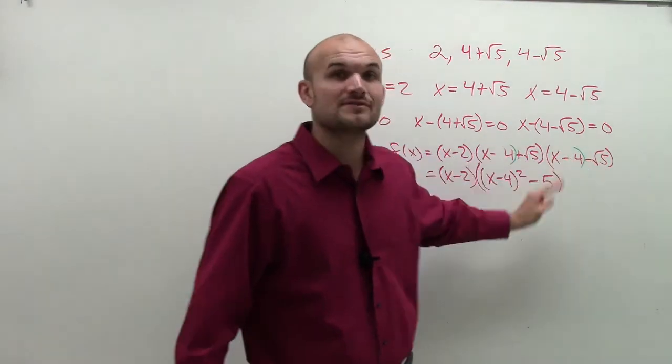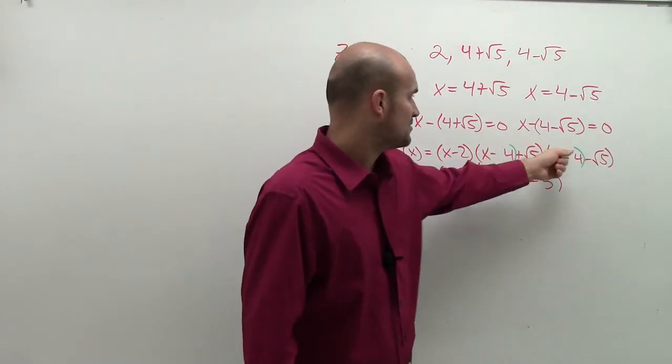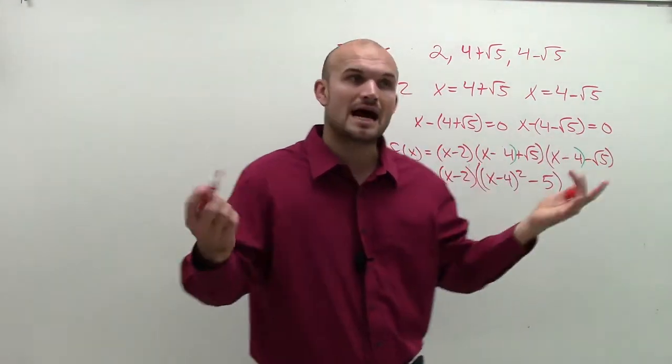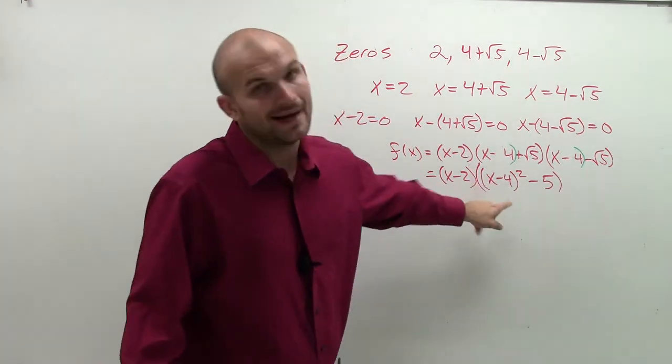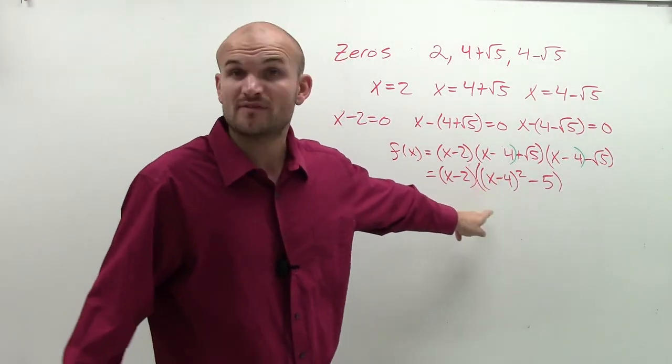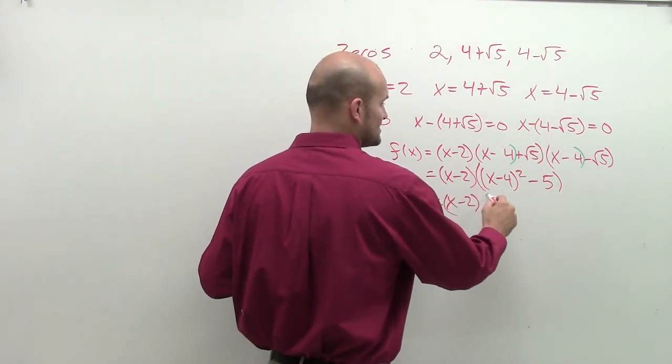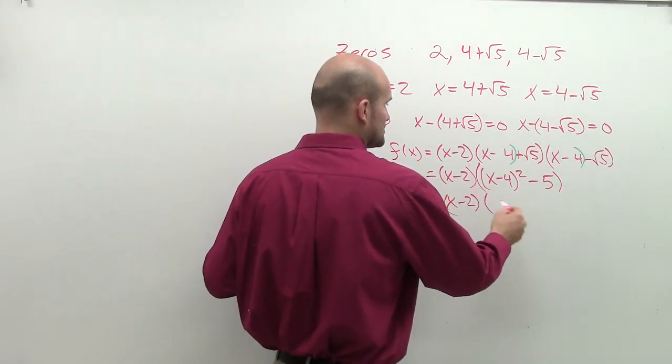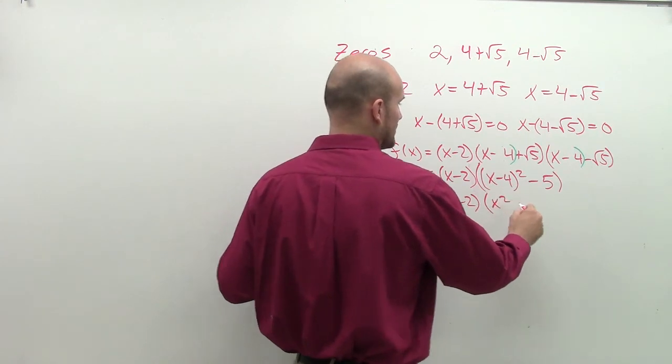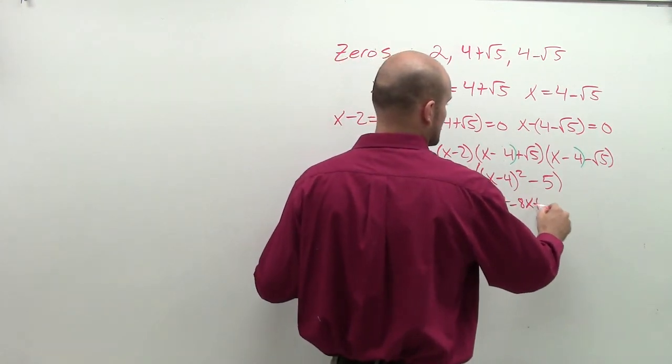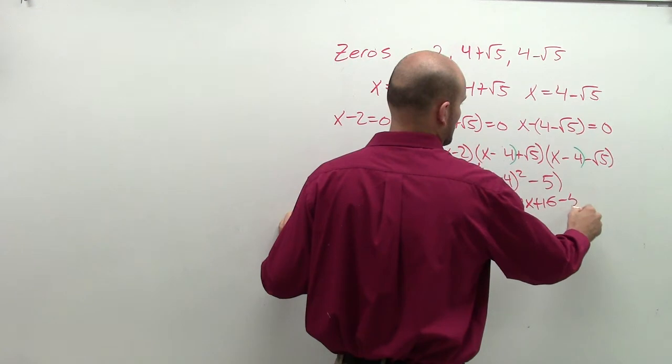All right, so you can see I can apply the difference of two squares as these are my first two terms, these are my last two terms, opposite signs. Now, I am going to have to multiply this out, but it's a perfect square trinomial, so I should be hopefully pretty used to multiplying those. So that's going to become x squared minus 8x plus 16 minus 5.